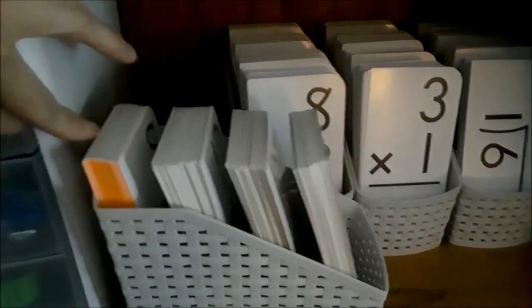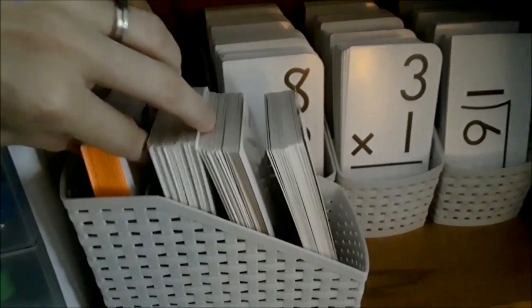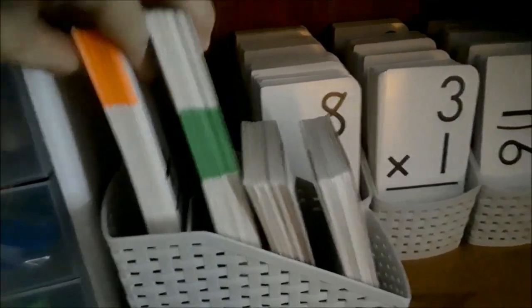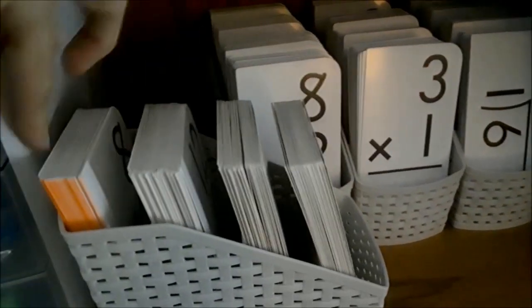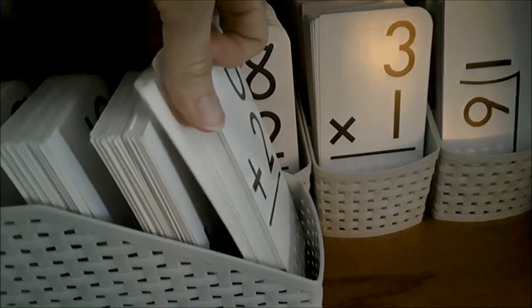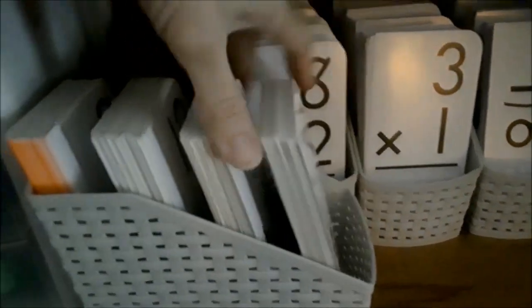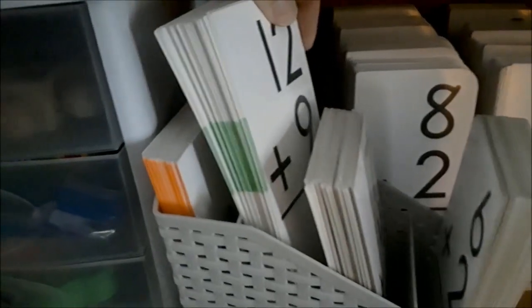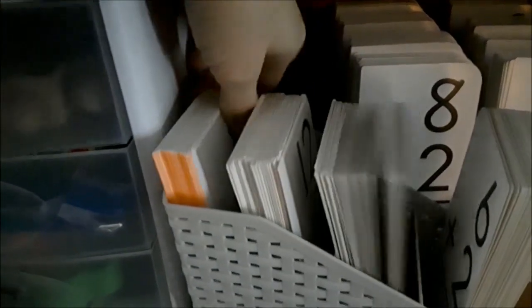Each deck like this—these are the addition cards—I've got a label with highlighters on the sides. These go in order from easiest to more difficult, so I've got the plus 0, plus 1, and plus 2 together, then plus 3, 4, and 5, plus 6, 7, 8, and 9, and plus 10, 11, and 12.